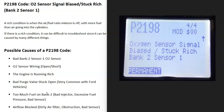Today I'm talking about a P2198 code, what it is and how you go about fixing it. A P2198 code is an oxygen sensor signal biased stuck rich, Bank 2 Sensor 1.